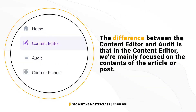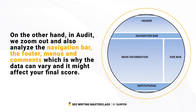The main difference between the content editor and audit is that in the content editor we're mostly focused on the contents of the article or the post. On the other hand, in audit we zoom out and also analyze the navigation bar, the footer, menus, and the comments, which is why the data can vary and it might affect your final score.